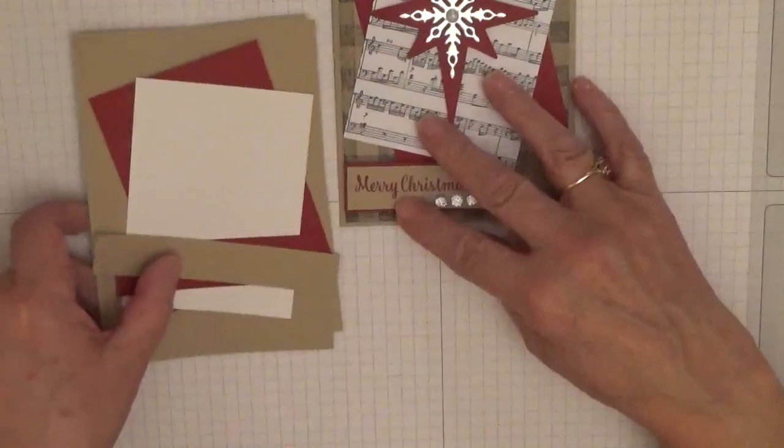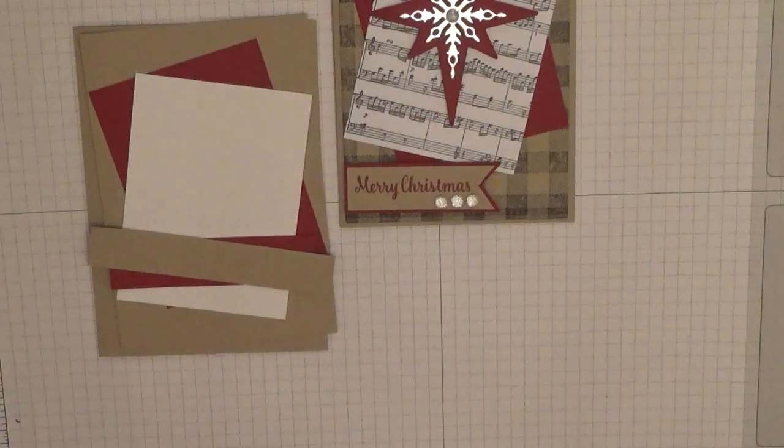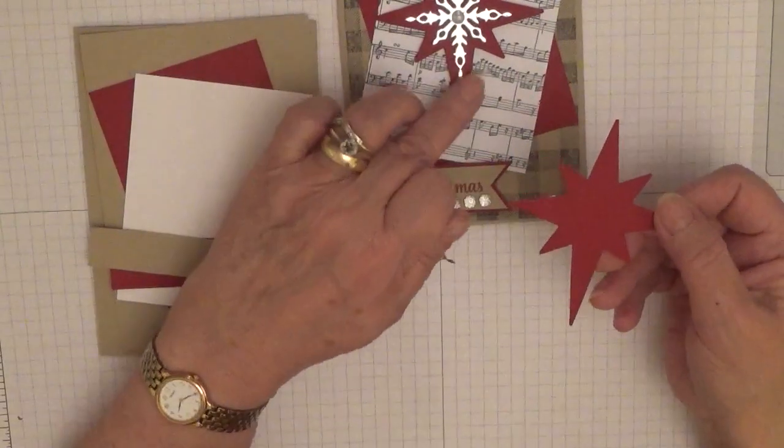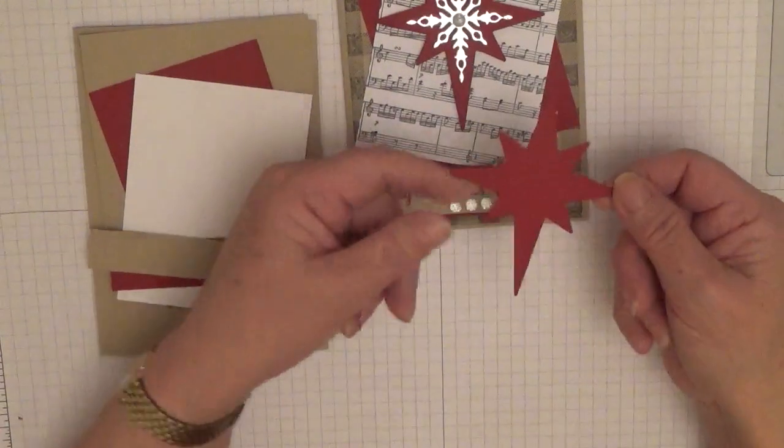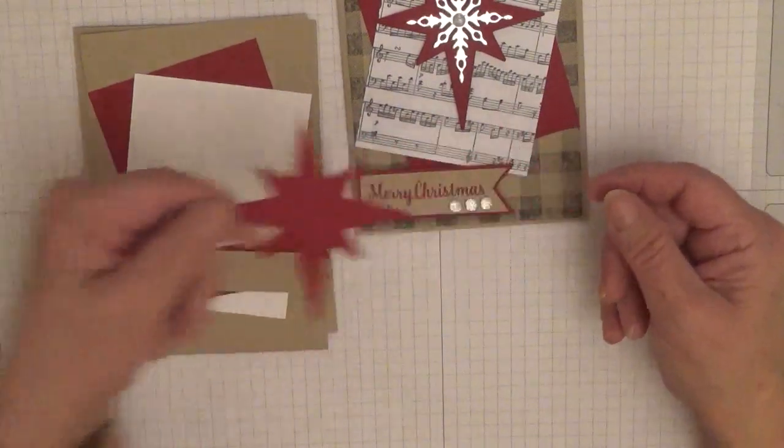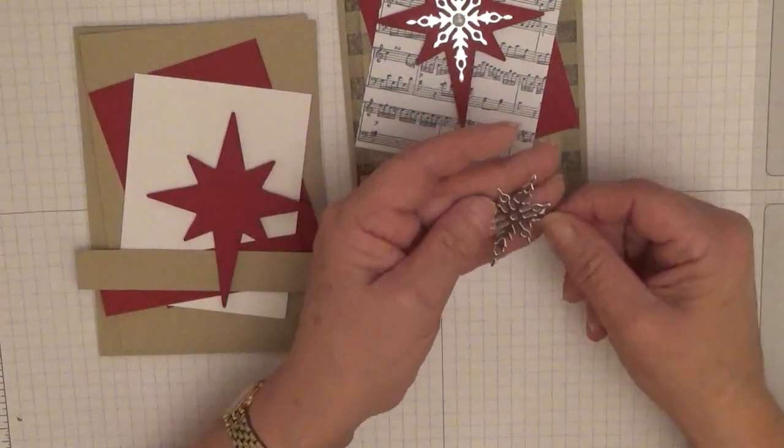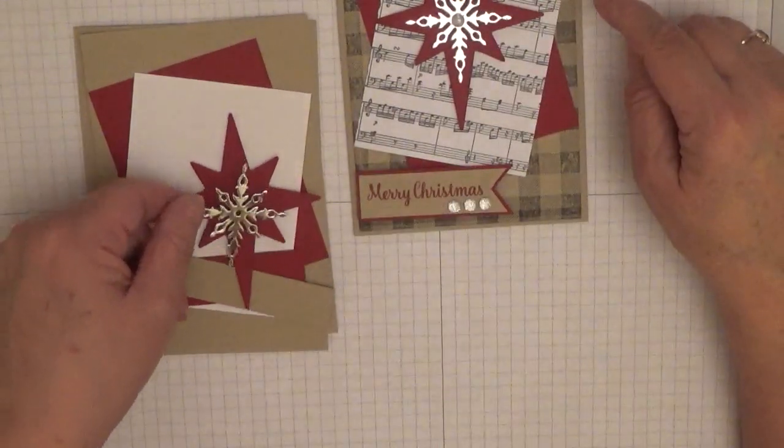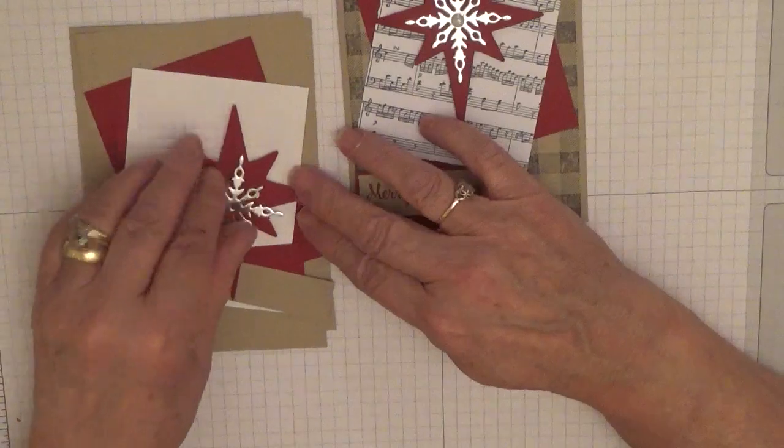You'll also need a scrap of whisper white for the star, sorry, cherry cobbler for the star which I've already cut out, and obviously the silver, a piece of silver for the silver star.